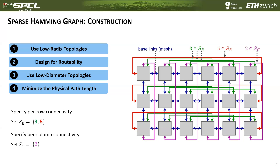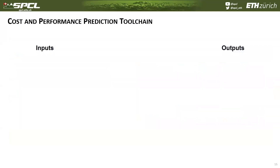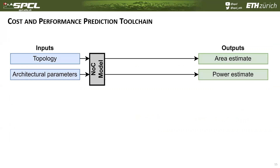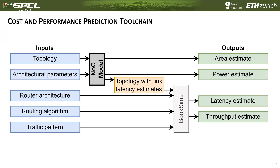But how do we select which integers to put into sets SR and SC? To do this, we developed a fast toolchain for cost and performance predictions. Our toolchain takes the topology as well as the architectural parameters as input. These inputs are fed into our custom network-on-chip model, which outputs an area estimate and a power estimate. Furthermore, this model estimates the latency of each router-to-router link. These link latencies, together with information about the router architecture, routing algorithm, and traffic pattern, are then fed into the BookSim2 network-on-chip simulator, which performs cycle-accurate simulations to estimate the latency and throughput of our network.